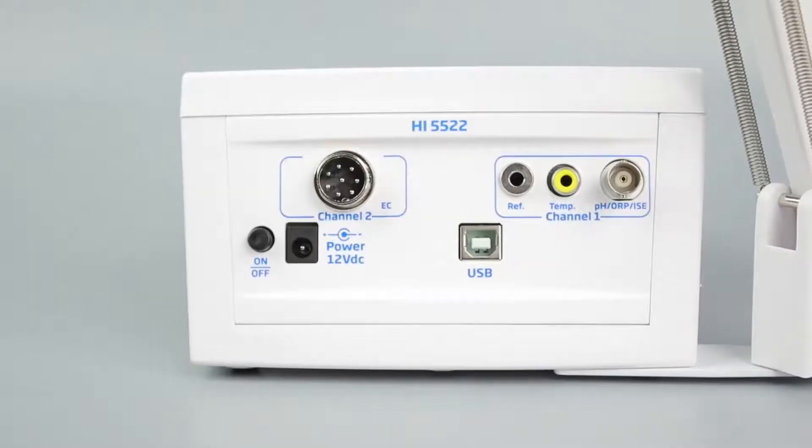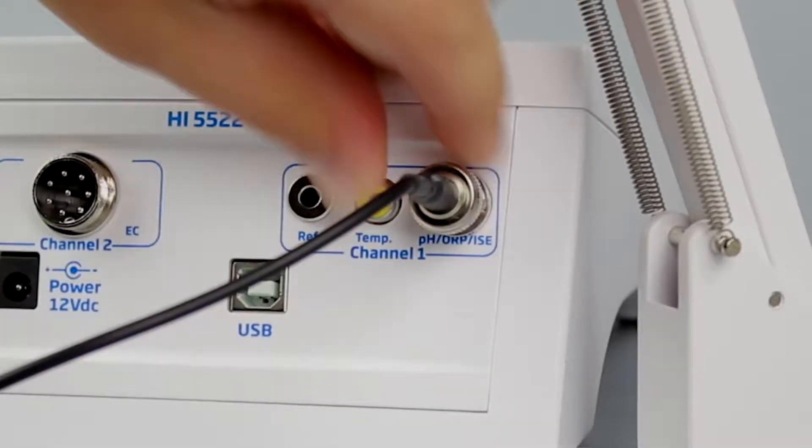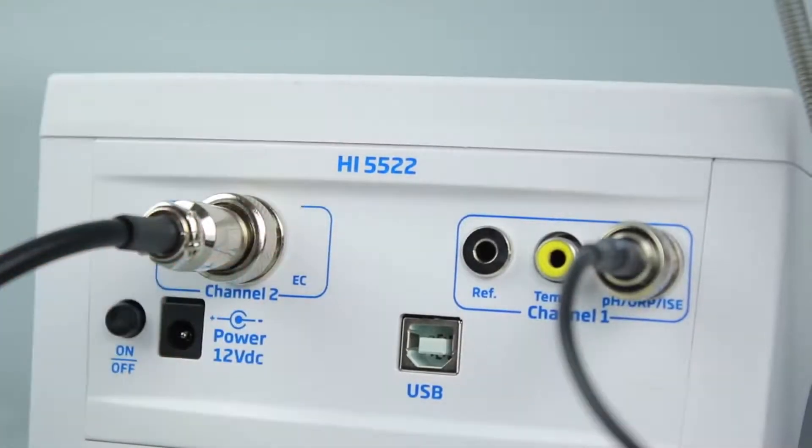On the back of the meter, you will see inputs for each channel. Attach the desired sensors to the inputs and make sure that each connection is securely fastened.